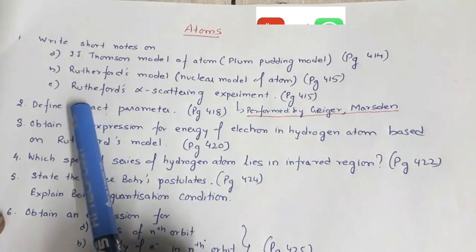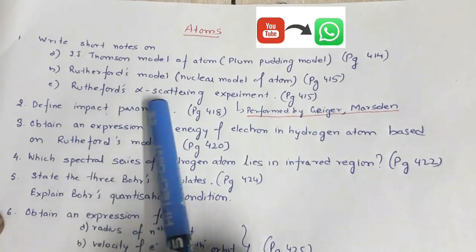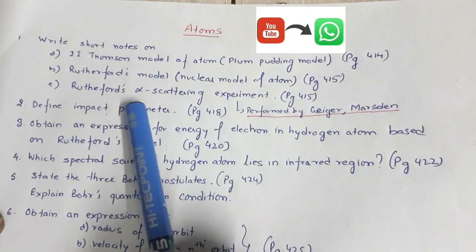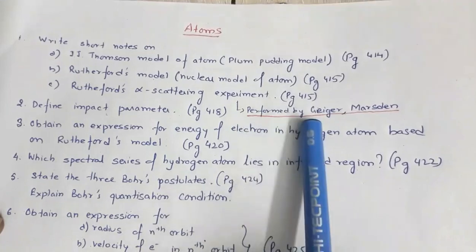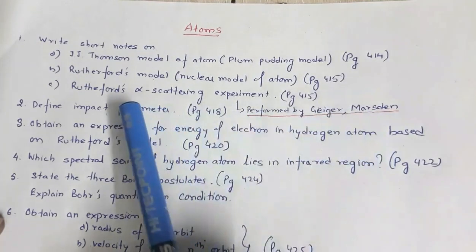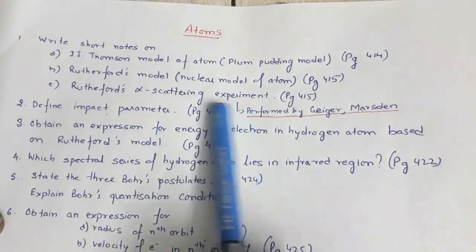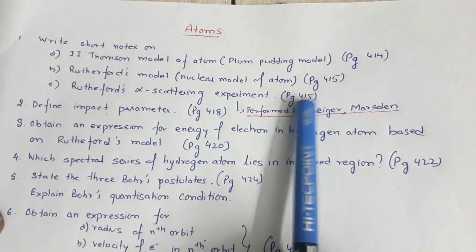Then next is write short notes on Rutherford's alpha scattering experiment. Now you must remember that this experiment was actually performed by Giger and Marcin on the suggestion of Rutherford. So they may ask you to write short notes on this experiment. This is given in page number 415.